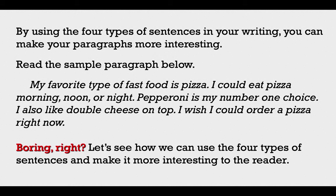By using the four types of sentences in your writing, you can make your paragraphs more interesting. Read the sample paragraph below: 'My favorite type of fast food is pizza. I could eat pizza morning, noon, or night. Pepperoni is my number one choice. I also like double cheese on top. I wish I could order a pizza right now.' Boring, right? Let's see how we can use the four types of sentences and make it more interesting to the reader.